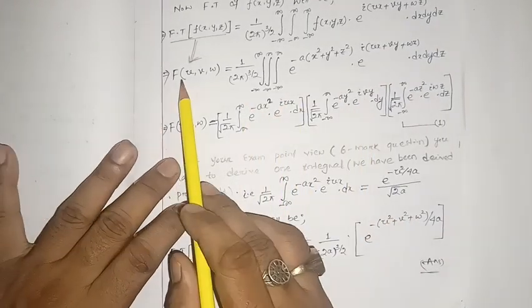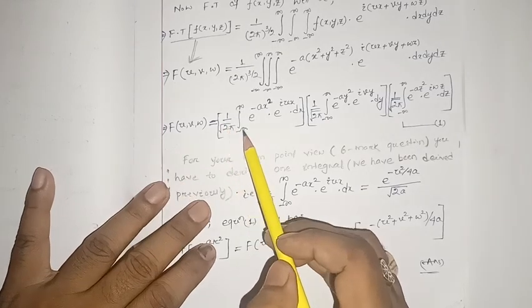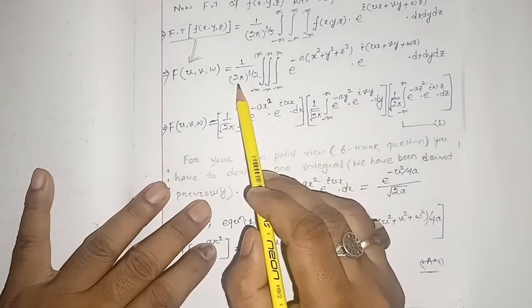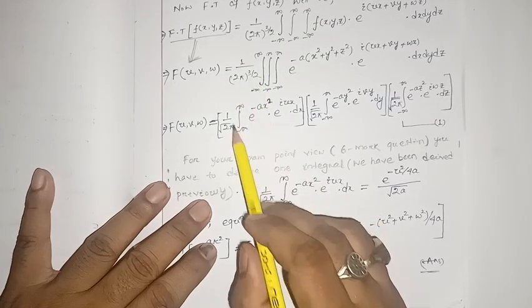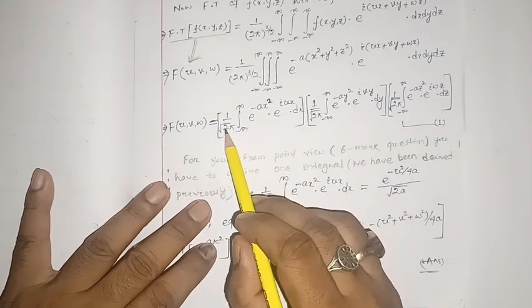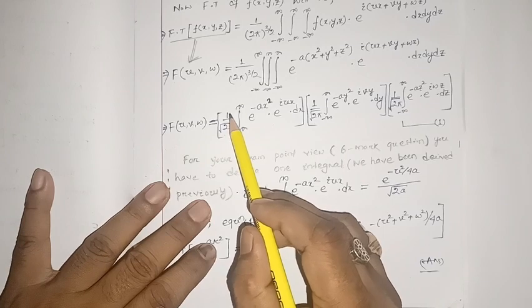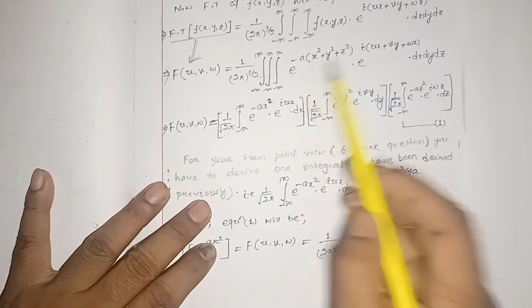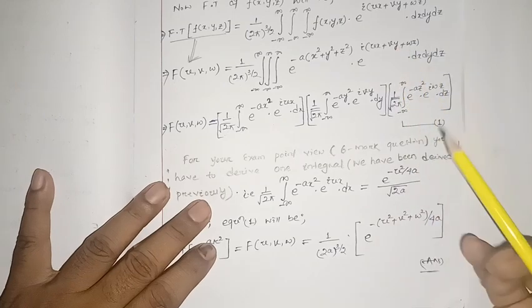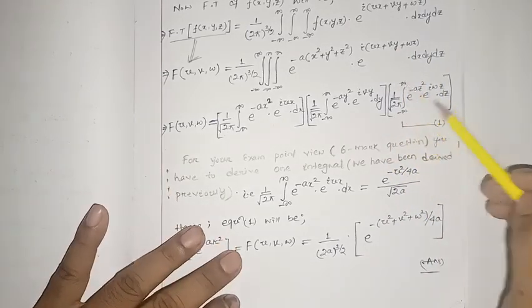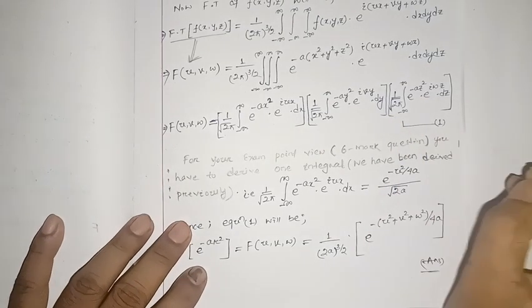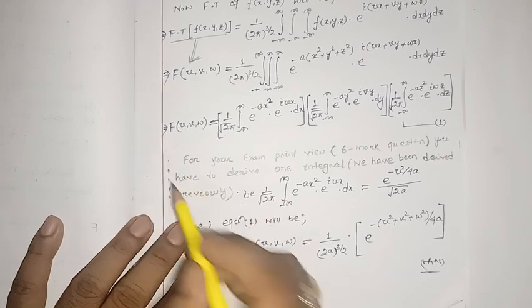This triple integral can be separated into three independent 1D integrals. Capital F(u, v, omega) equals the product of: one by root of two pi, integral of e to the minus a x squared times e to the i ux dx; times one by root of two pi, integral of e to the minus a y squared times e to the i vy dy; times one by root of two pi, integral of e to the minus a z squared times e to the i omega z dz. This is equation number one.